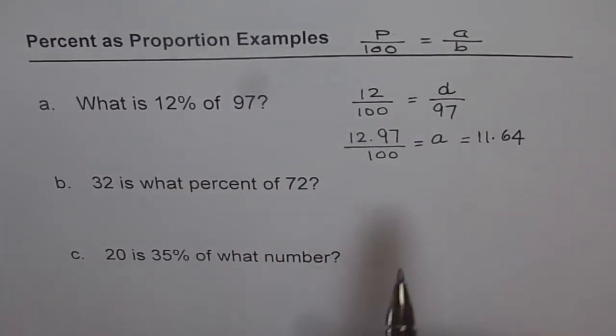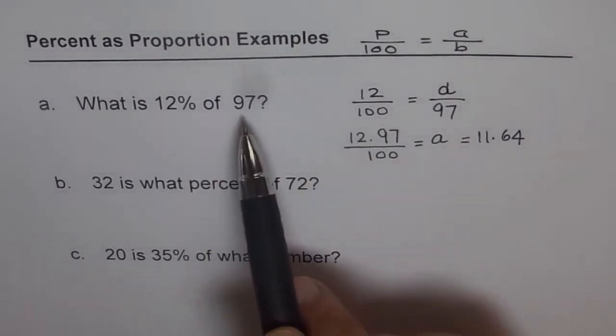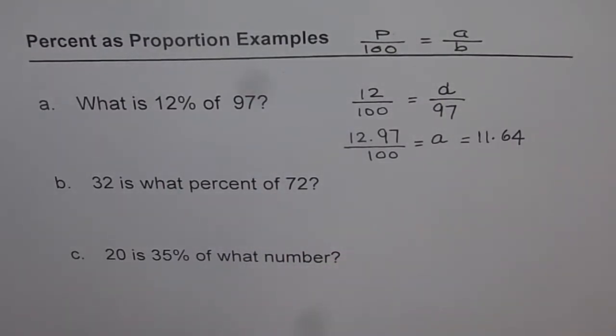You can always check this answer. How will you check? Find 12% of 97 using calculator and you will get 11.64. That means 12 over 100 times 97.